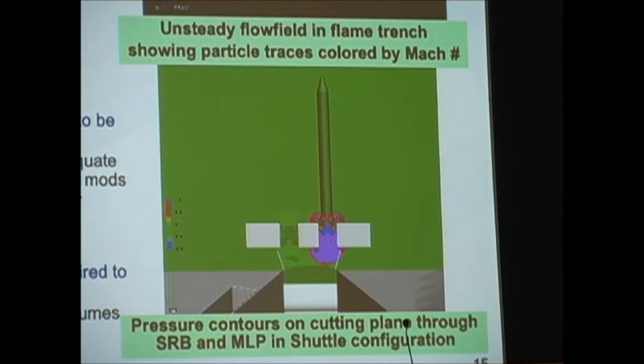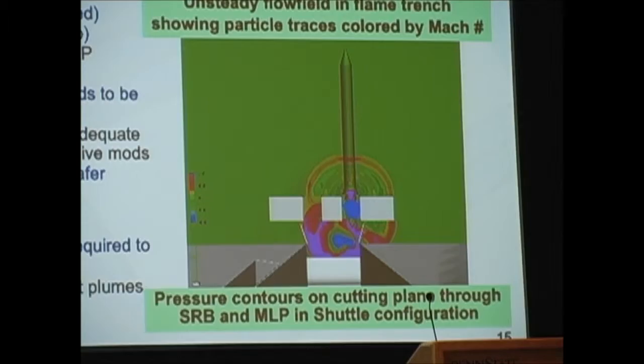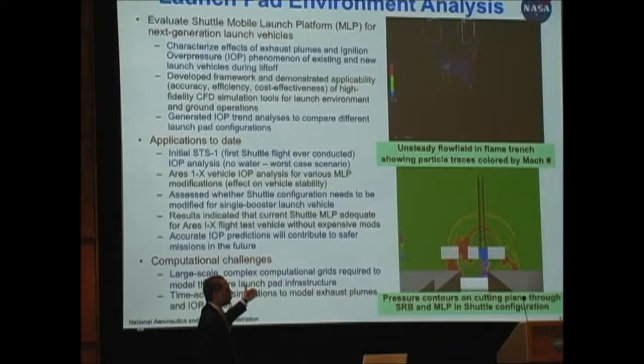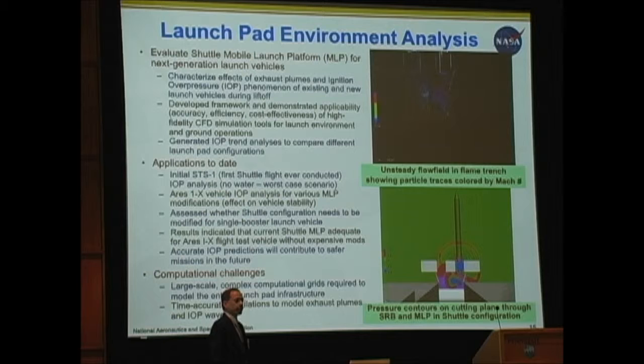One idea was to seal that hole off, which would cost about 10 million dollars, or you can leave it open and analyze the impact of the ignition overpressure on the vehicle in the first couple of seconds of mission elapsed time. Calculations show that removing one of the deflectors would be enough, since the main signature of ignition overpressure comes from the hole where the rocket sits. With the water suppression system, PSI levels would be brought to acceptable levels. This is another calculation done in support of NASA missions.